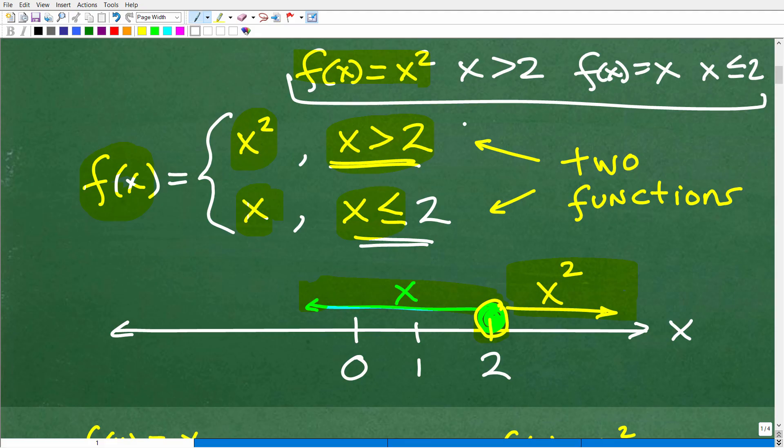And if we have values of x that are equal to or less than 2, we're going to be thinking about that x function. So, again, over here, greater than 2, that's x squared. Anything greater than 2, we're thinking about x squared. Anything 2 or less, we're thinking about x.